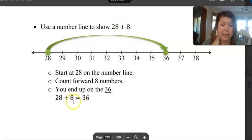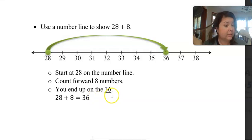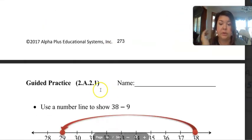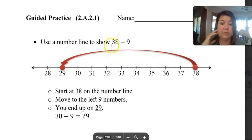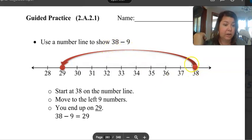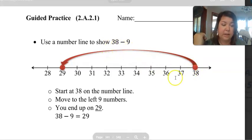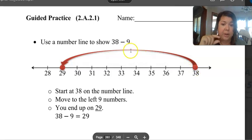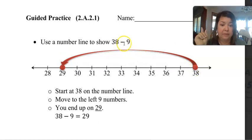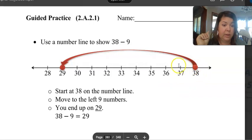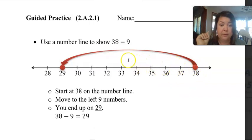So our number sentence is twenty-eight plus eight equals thirty-six. Okay, you can do the same thing with subtraction. So if it's thirty-eight minus nine, you start at thirty-eight, you start at this number here on the left, and then now we're going to go backwards, so we're going to the left because it's a minus. So we go one, two, three, four, five, six, seven, eight, nine, and we land on the number twenty-nine.